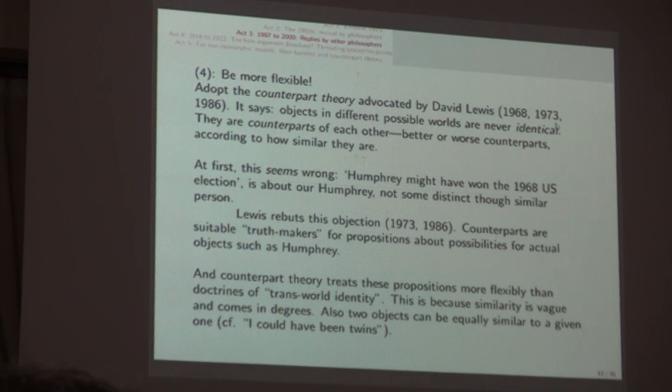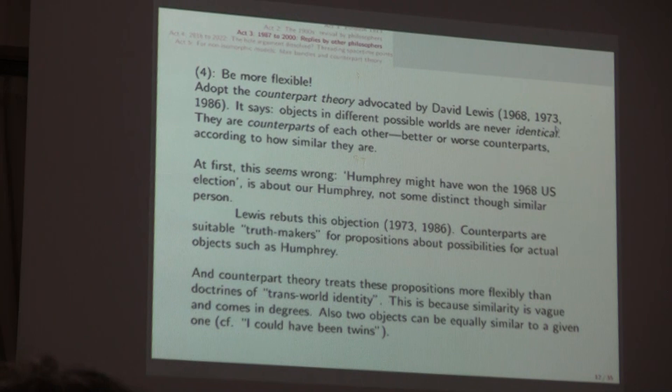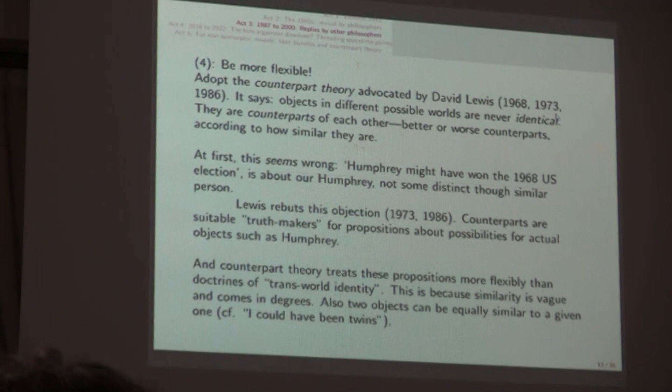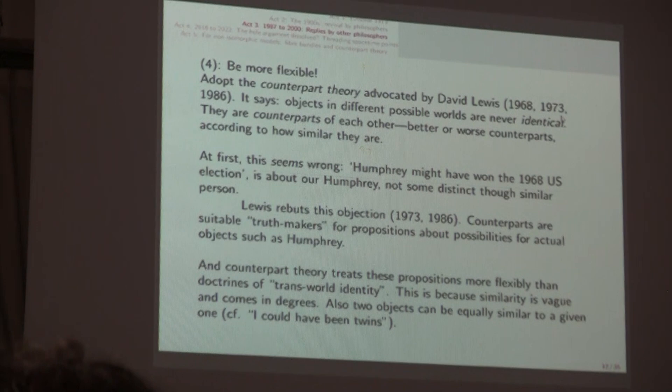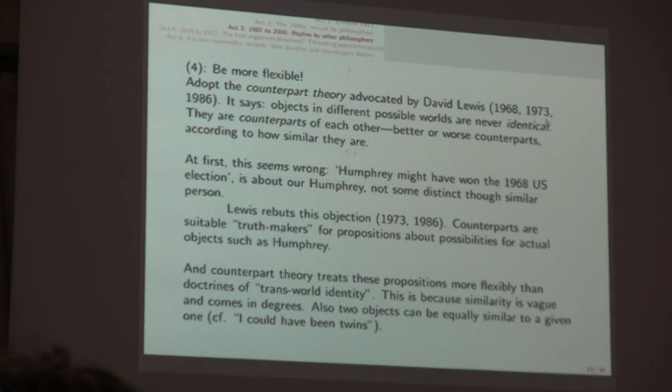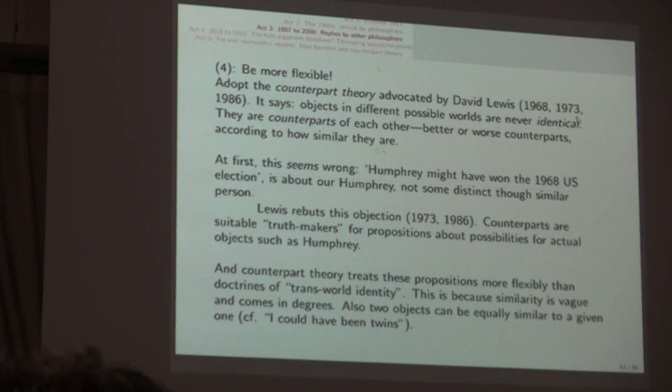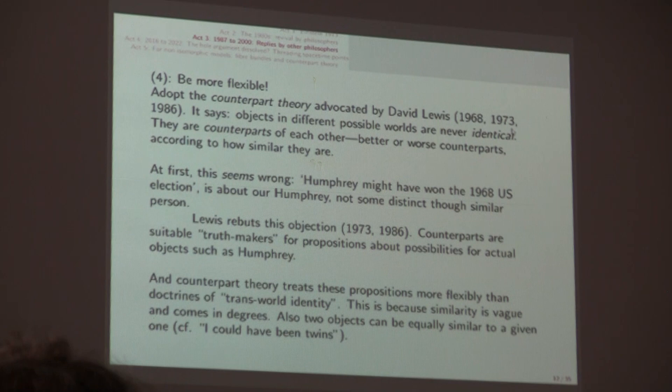The fourth development is this thing I want to concentrate on which is the counterpart theory advocated by Lewis in a paper in 68 and two books in 73 and 86. It says objects in two different possible worlds are never identical. They're counterparts of each other, better or worse counterparts according to how similar they are. Now at first this seems wrong as the other famous philosopher Kripke objected with a very mid-1970s style example.